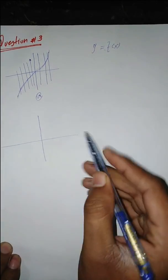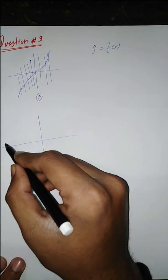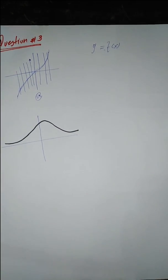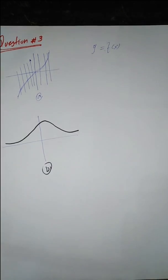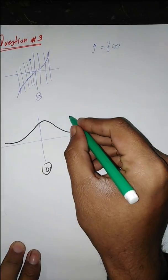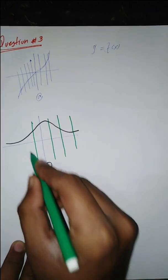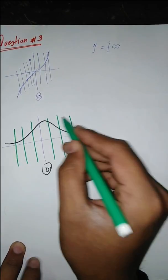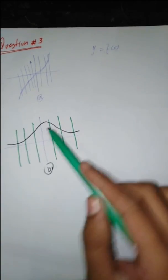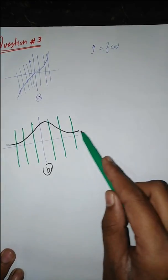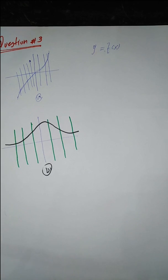For part b, I draw the vertical lines along the graph. When I draw vertical lines, there is no such line that intercepts the graph y equals f of x at two or more points. So this graph is also a graph of a function.